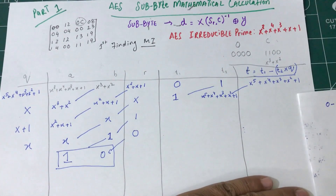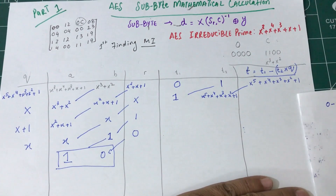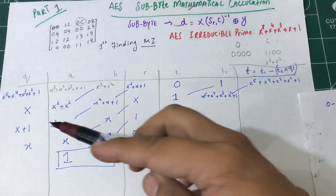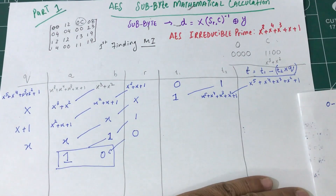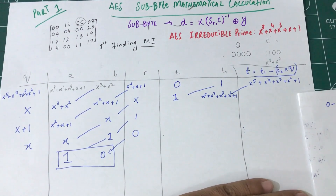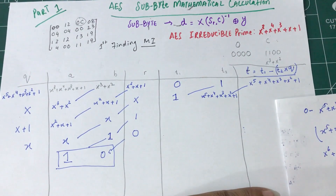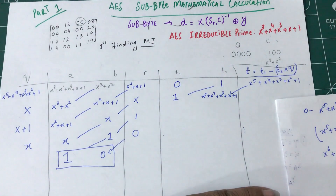So x^5 plus x^4 plus x^3 plus x^2 plus 1. First I need to multiply by my quotient, which is x — power of 1. When I multiply, I get x^6 plus x^5 plus x^4 plus x^3 plus x.